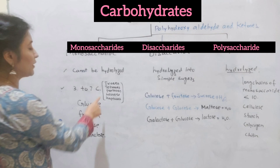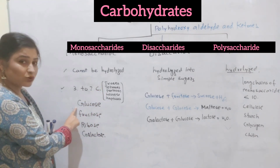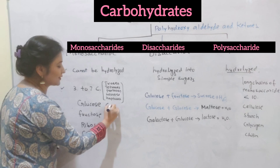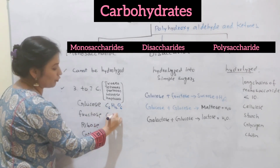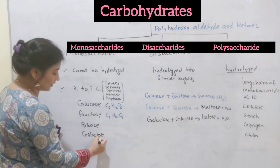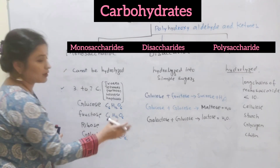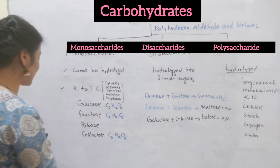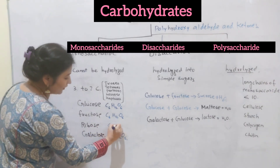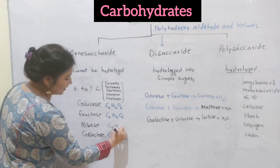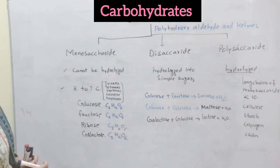At your level, pentose and hexose are mainly discussed. Glucose is a hexose — a 6-carbon compound with molecular formula C6H12O6. Fructose also has the same molecular formula C6H12O6, but its structural chain is different. Galactose also shares this molecular formula but differs structurally. Ribose has the formula C5H10O5, which is a pentose sugar.